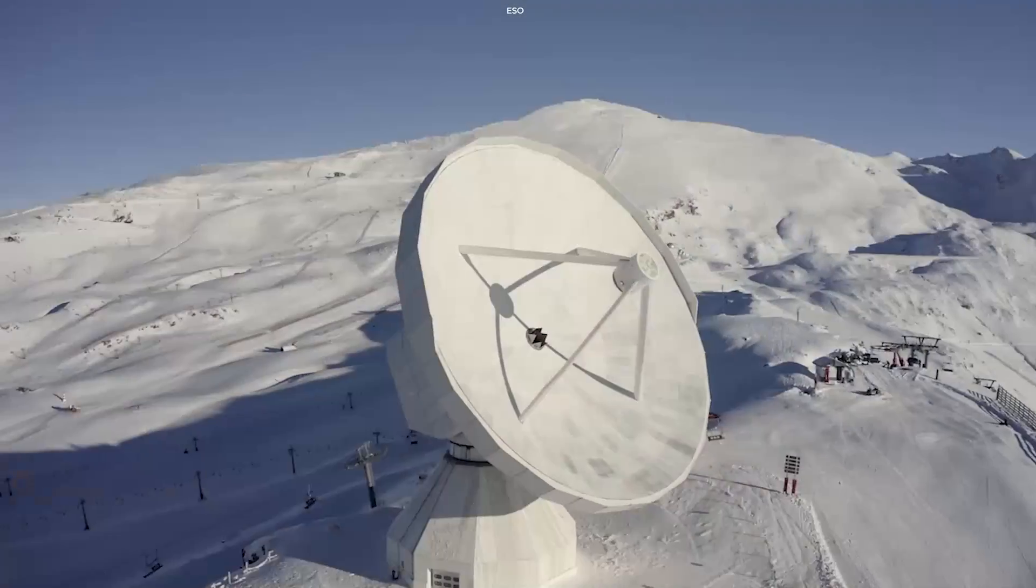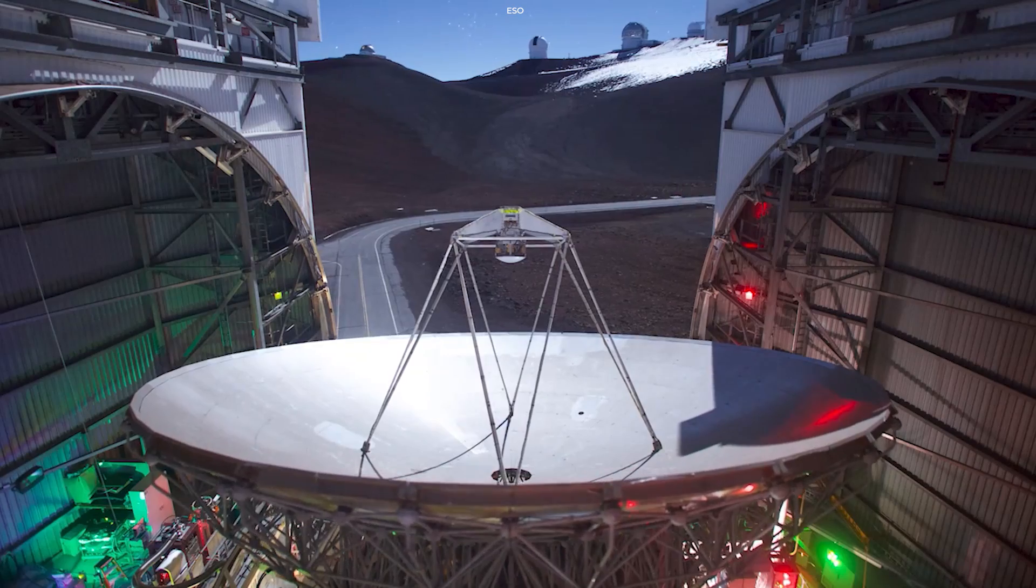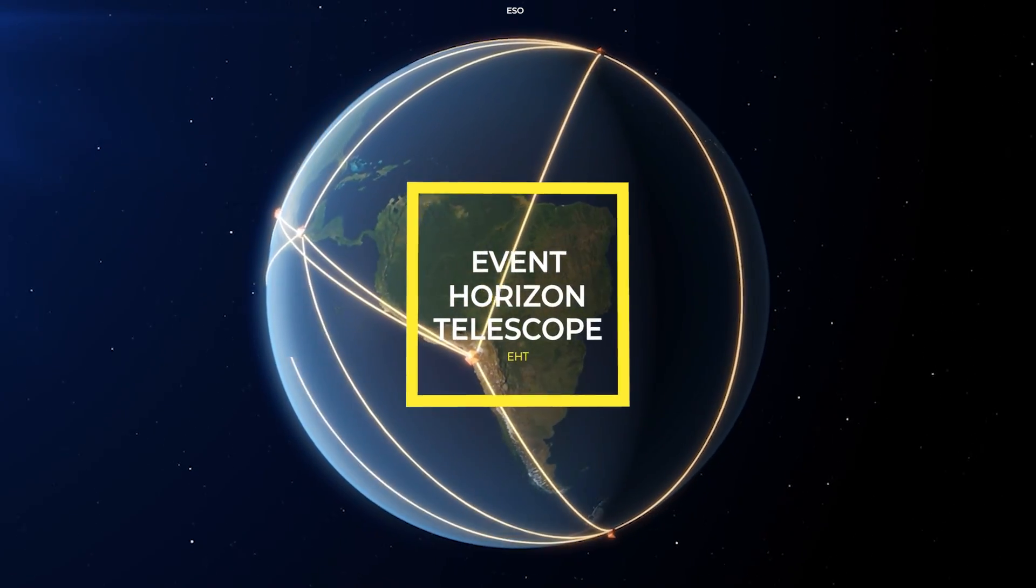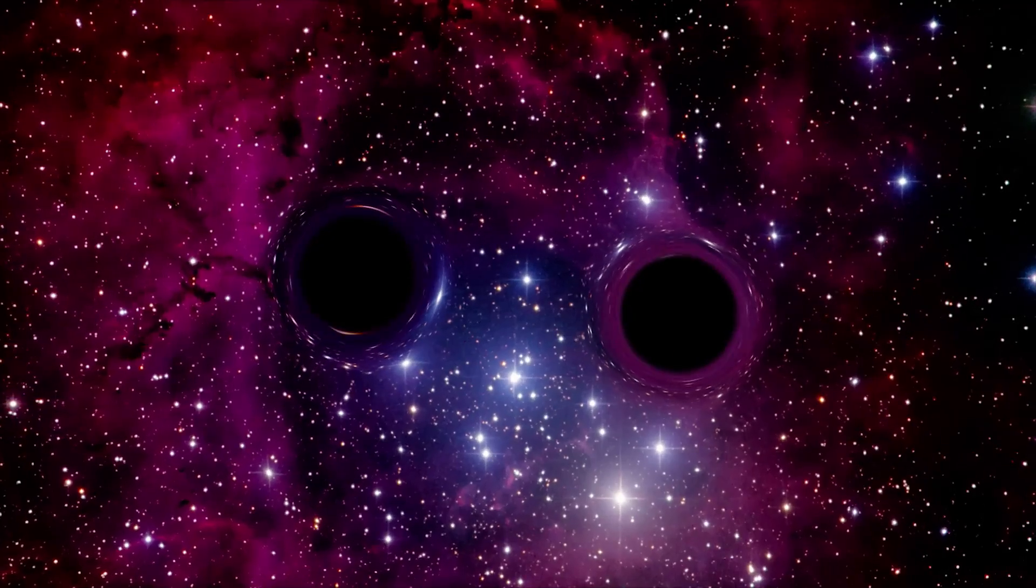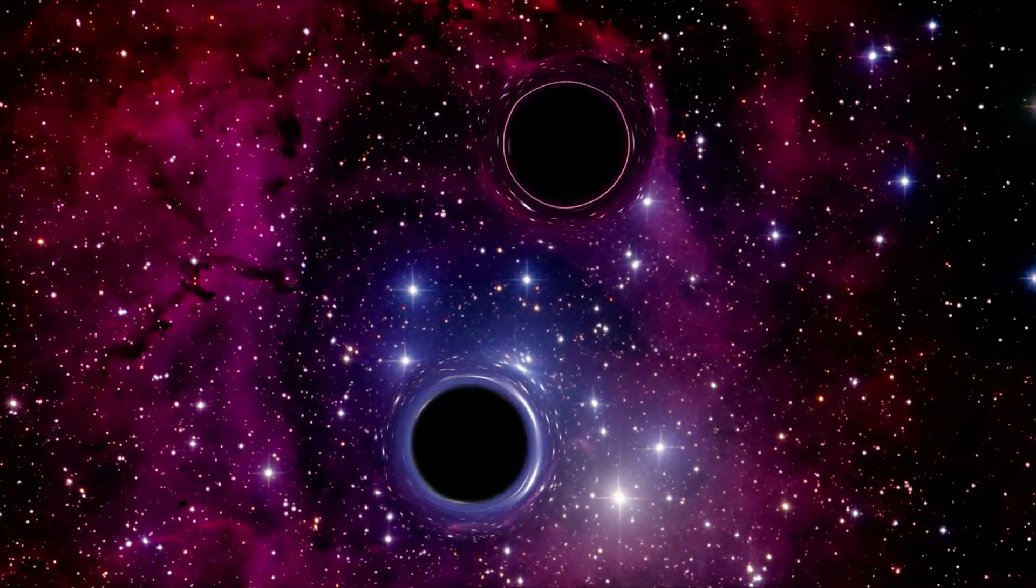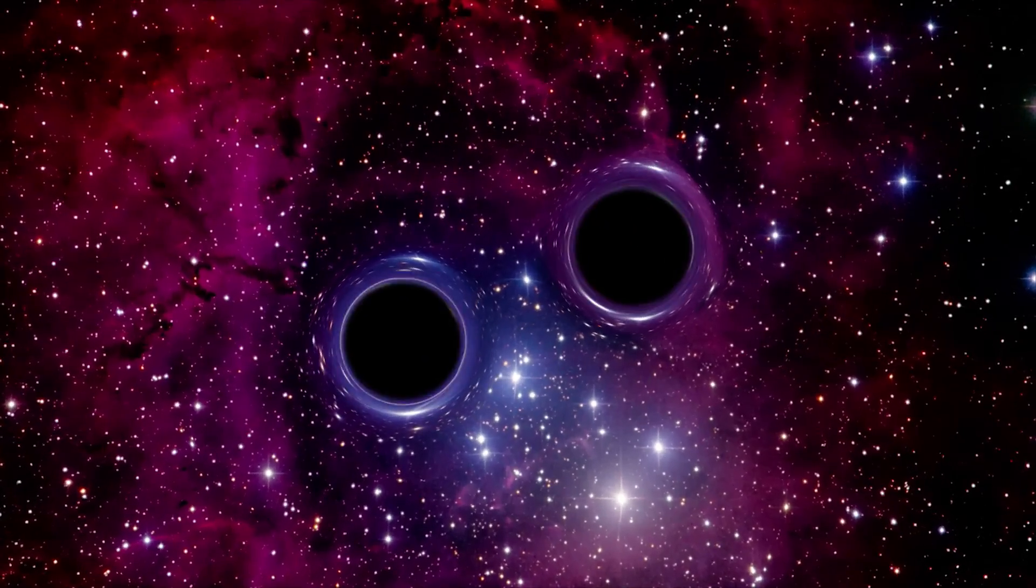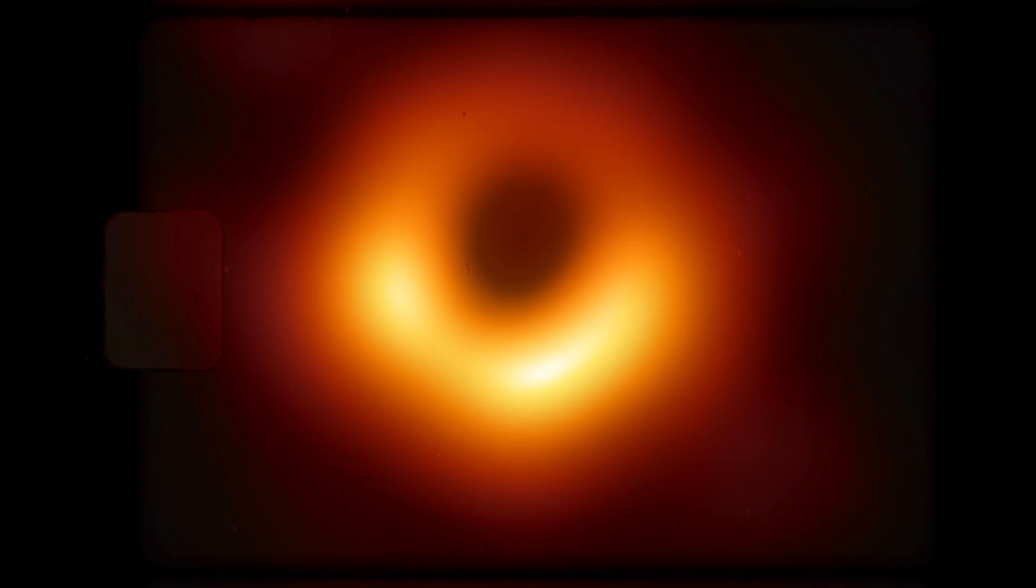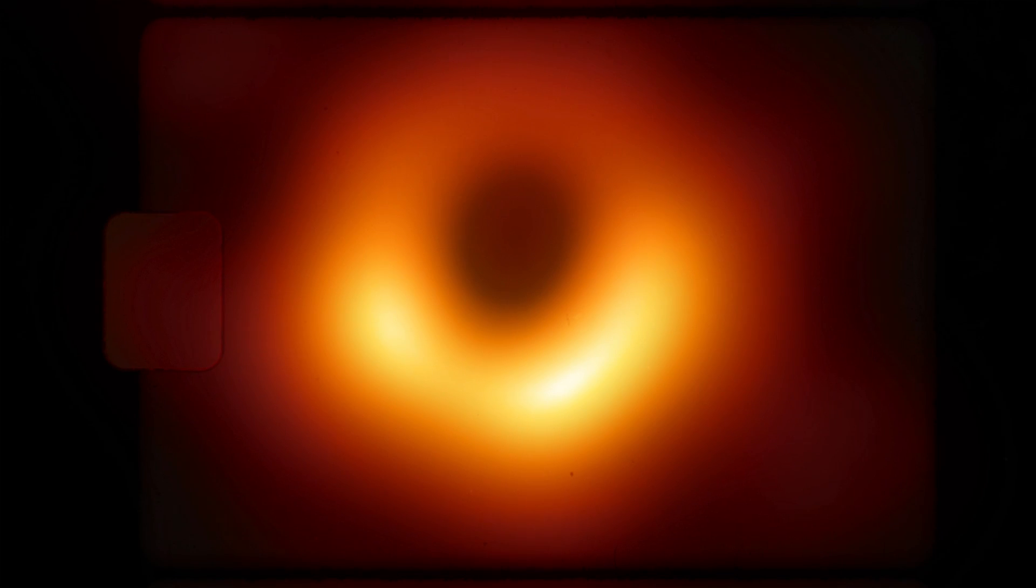The image was created by an international network of radio telescopes called the Event Horizon Telescope, and for the first time, it proved that the space-time distortions that we had observed before were indeed caused by black holes. Before this picture, we only had math that suggested black holes exist.